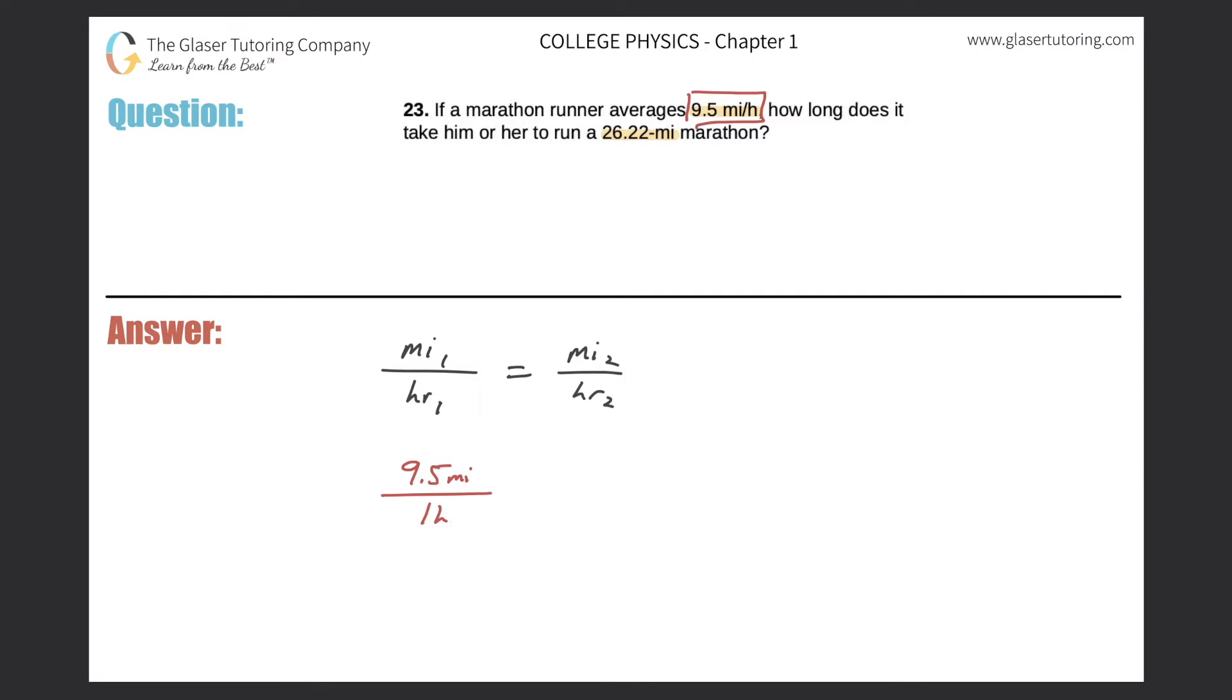Now we're going to look to plug in values on to the other side. They're asking us how long does it take him or her to run this 26.22 mile marathon, so it sounds like they're asking for a time. We don't know what the time here is in hours, and they want us to find the time associated with a 26.22 mile marathon, so it should be 26.22 miles on the top.